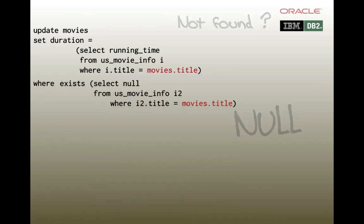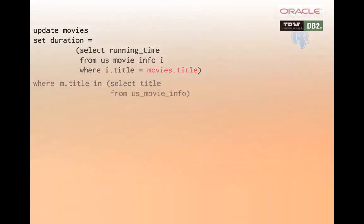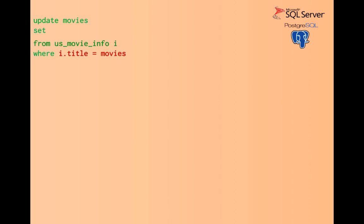So let's put a WHERE clause to check that the title exists in both tables before updating. Alternatively, we can check to see that the title is in US Movie Info. SQL Server allows an update based on a join. Notice that this automatically limits the update to titles that exist in both tables. This statement, short and simple, accomplishes the same thing as the query written for Oracle.